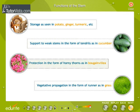Stems can also be modified for protection in the form of horny thorns as in bougainvillea, and for vegetative propagation in the form of runners as in grass.